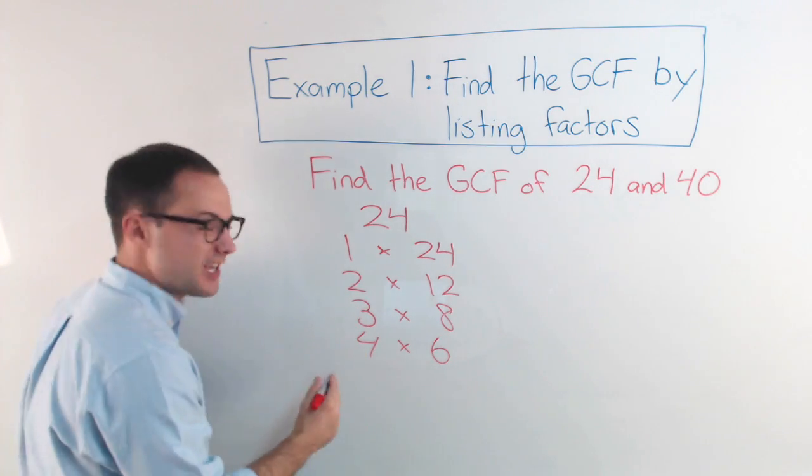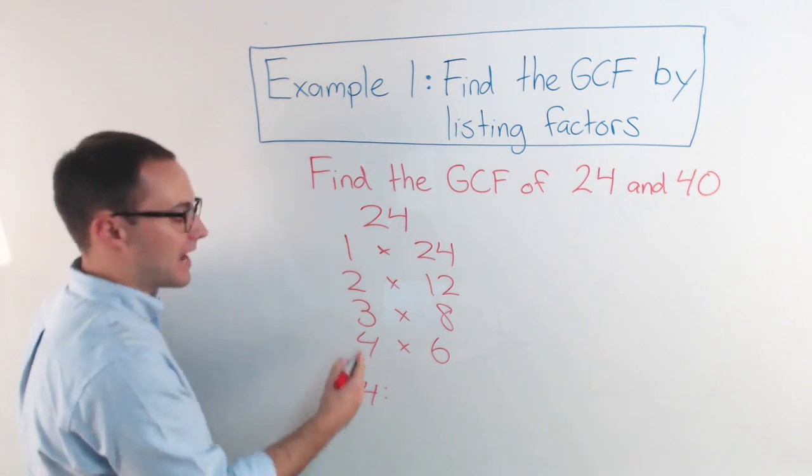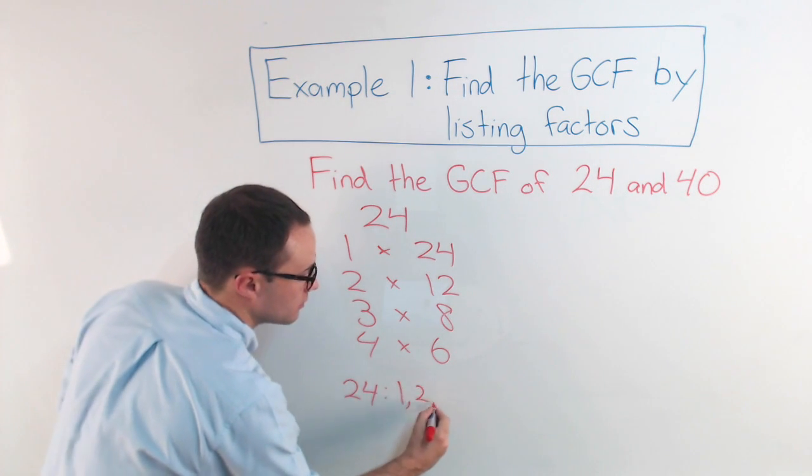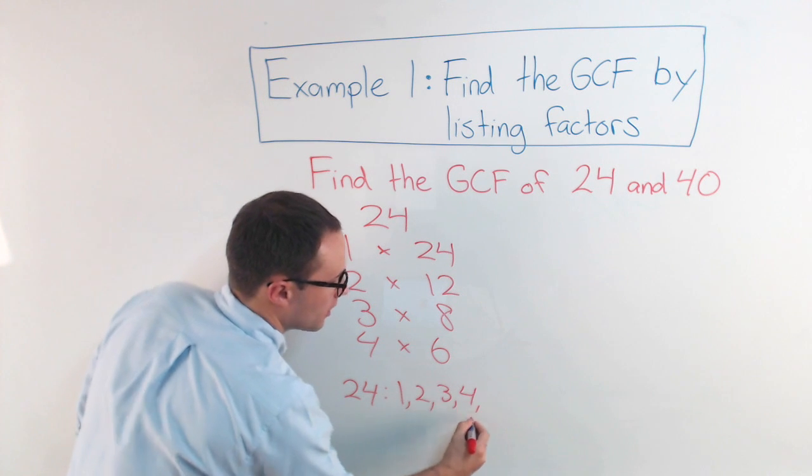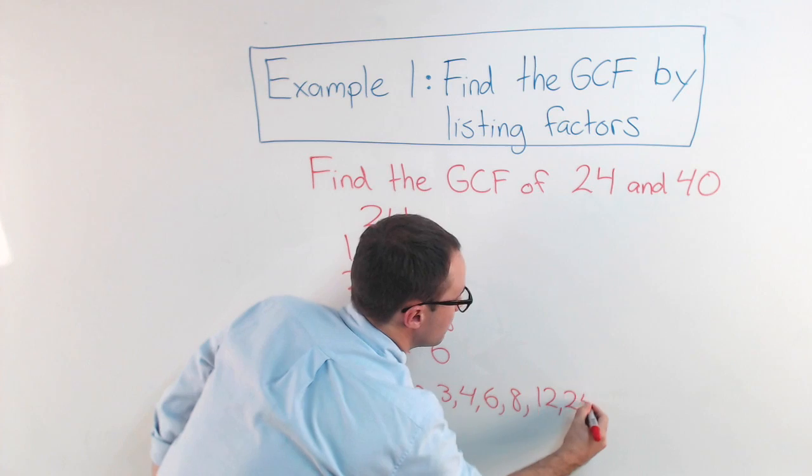I'm going to rewrite them in order down here. So for 24, my factors are 1, 2, 3, 4, 6, 8, 12, and 24.